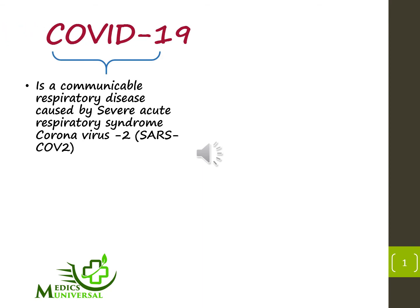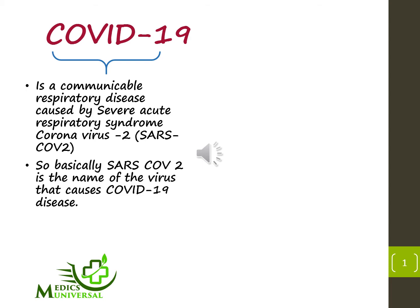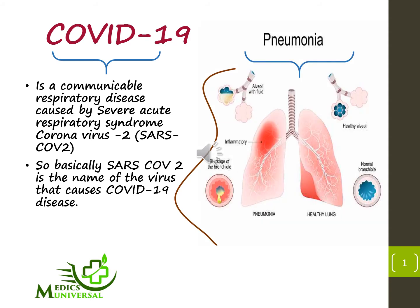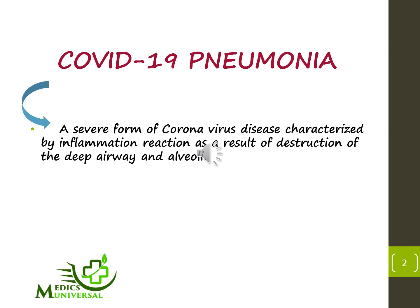COVID-19 is a communicable respiratory disease caused by severe acute respiratory syndrome coronavirus 2. SARS-CoV-2 is the name of the virus that causes COVID-19. Pneumonia, on the other hand, is an infection in the lung tissue caused by microbes, resulting in inflammation which causes fluid accumulation in the lung tissue, making it hard to breathe. COVID-19 pneumonia is therefore a severe form of coronavirus disease characterized by an inflammation reaction as a result of the destruction of the deep airway and alveoli.